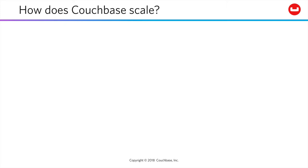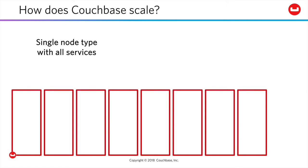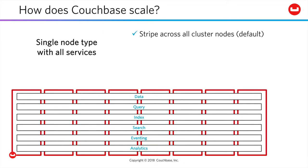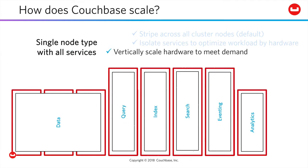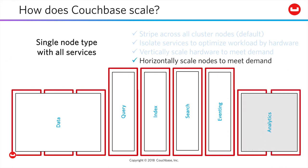As you can see, Couchbase likes keeping your data centers simple. We're providing a single node type which makes all our services available, but the services can be scaled and isolated independently. You can stripe everything equally across all nodes, which is the default and works for small clusters. Then, as you grow, you can isolate services to optimize their requirements to preferred hardware, and also scale the services independently to meet changing application demands. Over time, you handle growing demand by adding additional nodes tuned for the particular services requiring increased capacity. In short, with Couchbase, you get both maximum simplicity and maximum control across elastically and multidimensionally scalable clusters of commodity hardware.